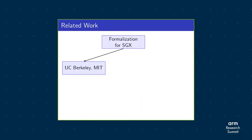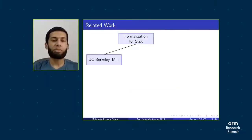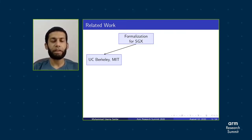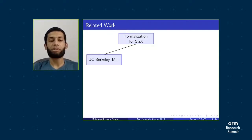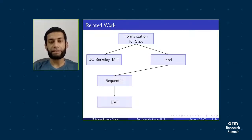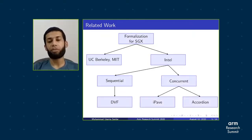There are a few related works for the formalization of attestation in Intel SGX. Specifically, a group of researchers at UC Berkeley and MIT provided formalizations for attestation for a trusted abstract platform. However, they do not provide proofs for attestation in Intel SGX; rather, they use some axioms for that. Intel also provides some works for Intel SGX in general: specifically, for sequential correctness they use a deductive verification framework (DVF), and for proving concurrency they use the concept of linear visibility with two tools called IPAV and Accordion.